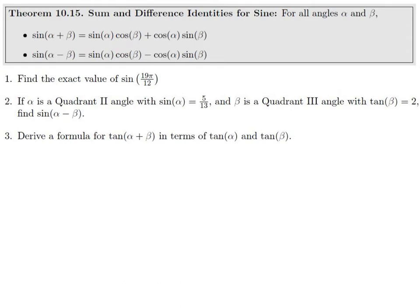The next identities are the sum and difference identities for sine. We have sin(α + β) = sin(α)cos(β) + cos(α)sin(β). So the pattern for sine of sum or difference is sine cos, same symbol, cos sine.